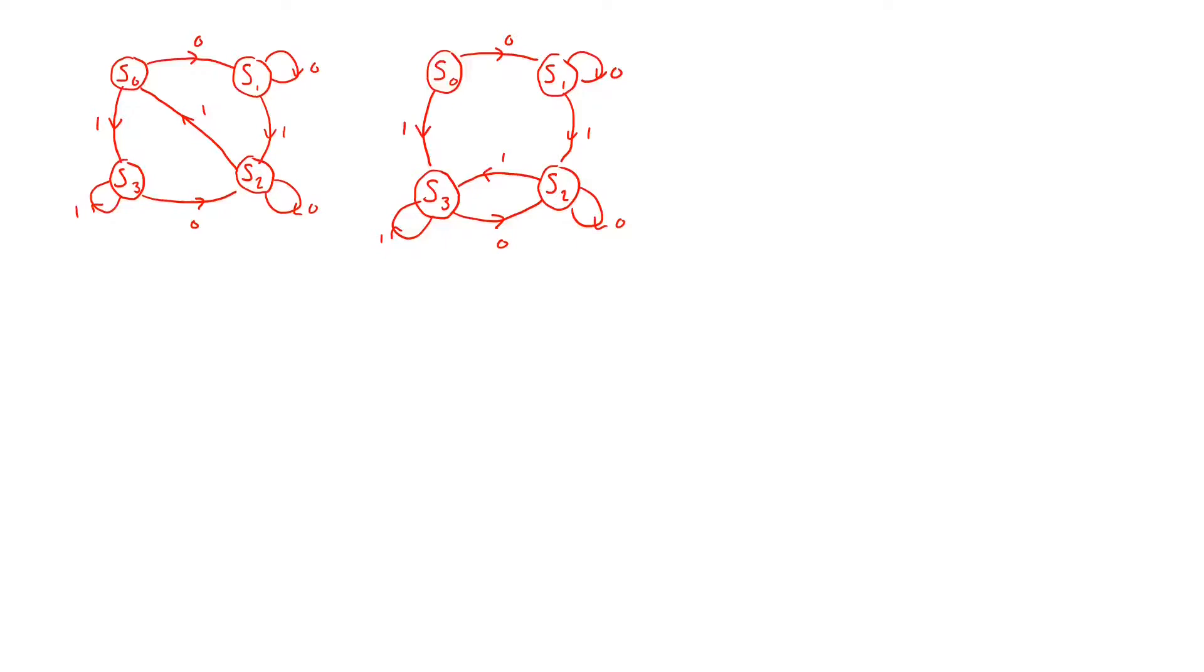So from this let us first try to understand what is the problem when we have race. So assume we will do the following state assignment. Assume now that S0 is encoded as 1 0, S1 is encoded as 0 1, S2 is encoded as 1 1, and S3 is encoded as 0 0.